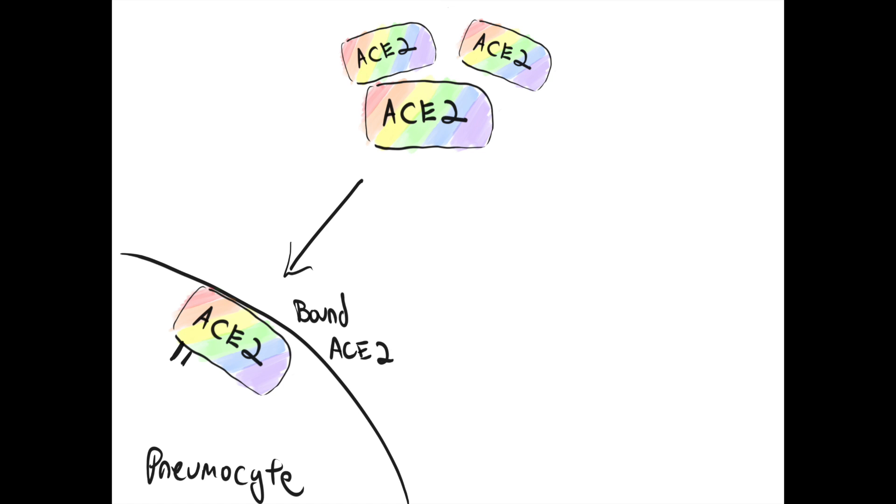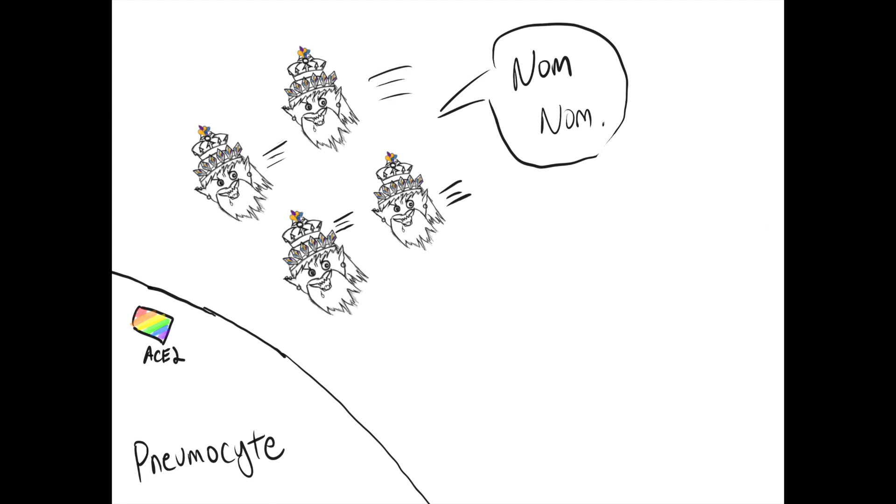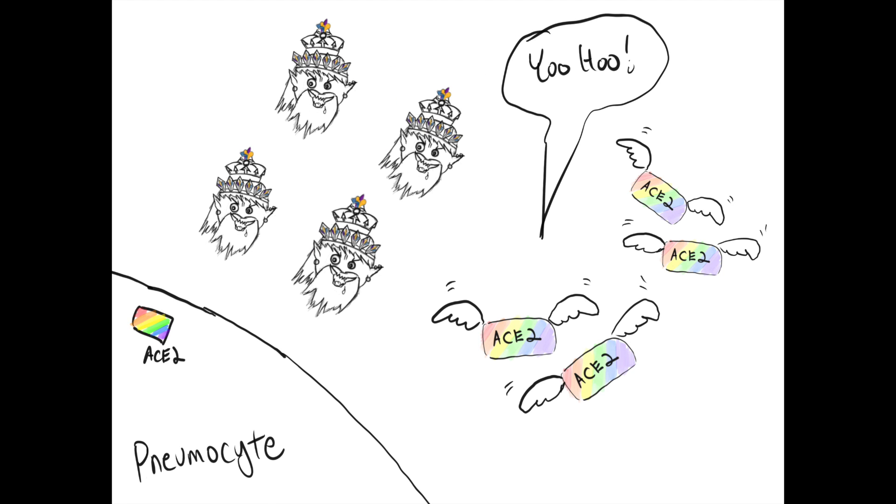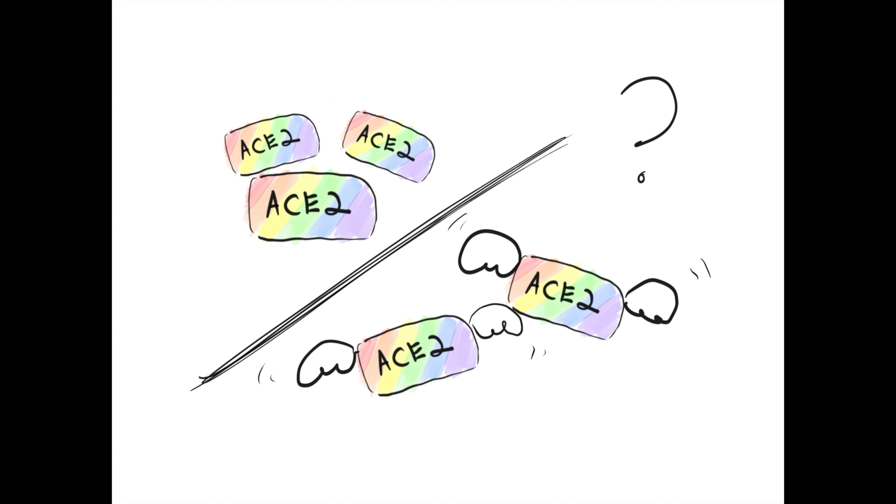The other form is soluble ACE2 that circulates. Obviously, since it's floating around, the coronavirus can't use it to enter anything. Could the circulating soluble ACE2 act as a decoy, even? Maybe. We don't know. And we don't know if ACE inhibition or angiotensin receptor blockade alter the ratio of membrane-bound versus soluble ACE2 upregulation.